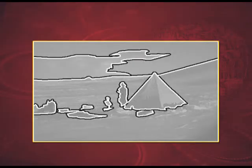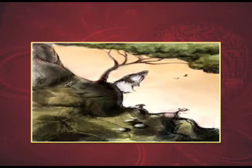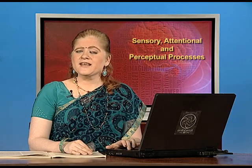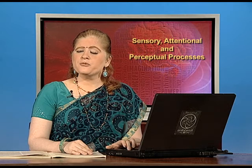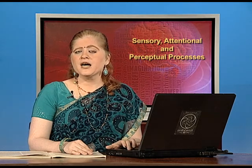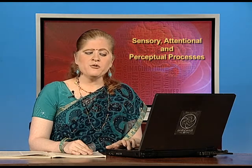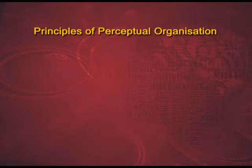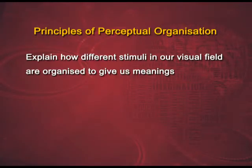Hence, we are able to differentiate the figure from the background. On your screens you will see two more examples. Here, with simple lines you are able to make the figure of a scenery — a river, a mountain, a hut. And here, a human face is very clearly perceived against a brown background of different textures. Now that you understand the tendency of the human brain to perceive a good figure using the figure-background relationship to its advantage, we move to the principles of perceptual organization. These principles explain how different stimuli in our visual field are organized to give us meanings. Let us deal with seven of them.